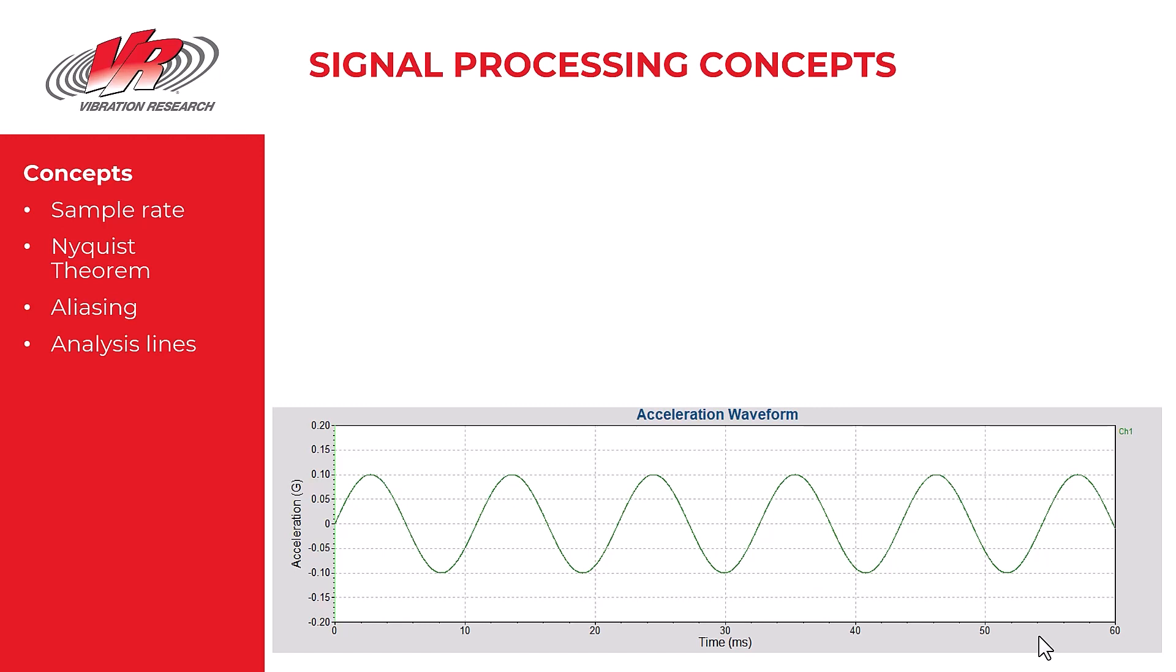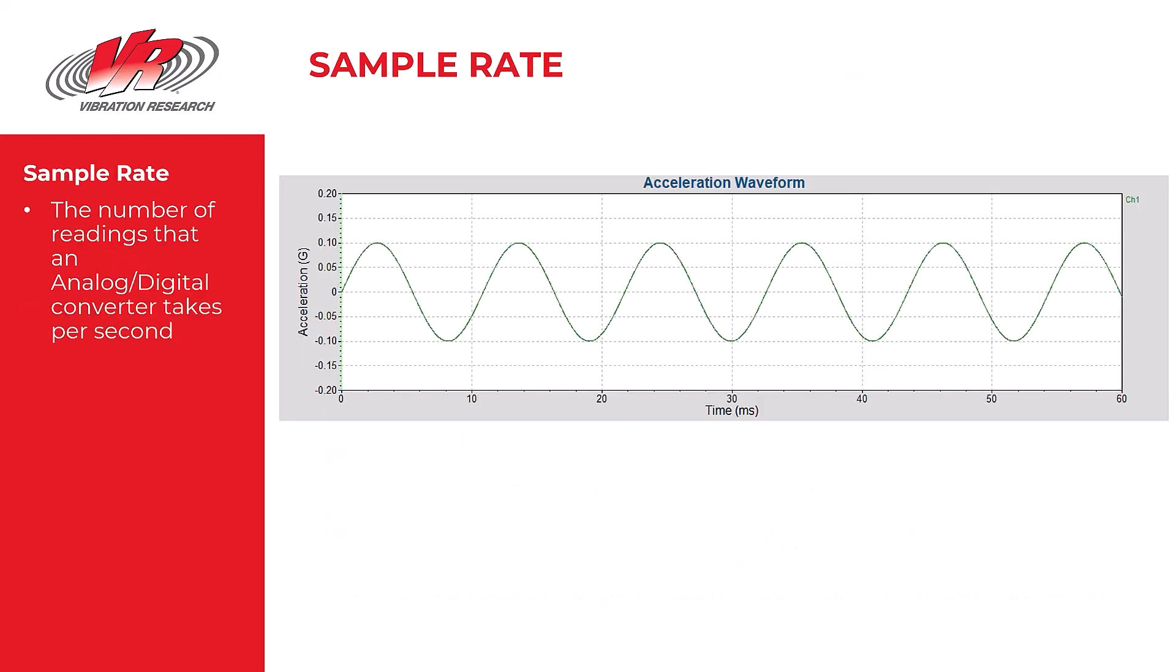First, the test engineer should consider what sample rate is being used when collecting the data. Sample rate in vibration testing controls the rate of analog to digital signal conversion.